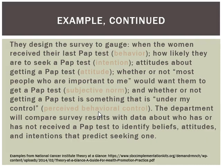Likewise, you could use the survey to find out barriers to women getting pap tests. Maybe they feel that their significant others don't care if they get a pap test, meaning the subjective norm is low. An intervention could bring significant others into the equation, teaching them about the importance of getting a pap in reducing cervical cancer risk, so they can encourage the women. Also, attitudes might reflect that a pap doesn't help screen for disease or that it's an uncomfortable test, so there may be things we can do to change attitudes and perceived behavioral control. These are the ways we use theories in public health.